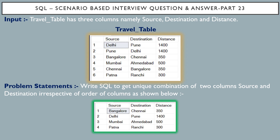Hello friends, this is Sunil and welcome back to my channel IT Junction for All. In this video I am going to discuss about SQL scenario-based interview question and answer part 23. The input travel table has three columns namely source, destination, and distance.